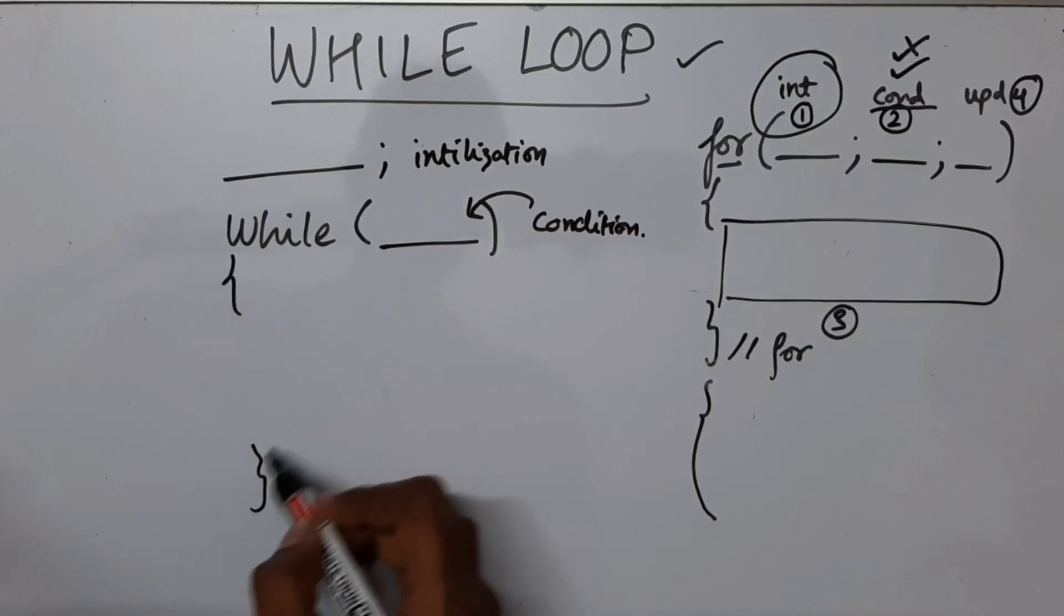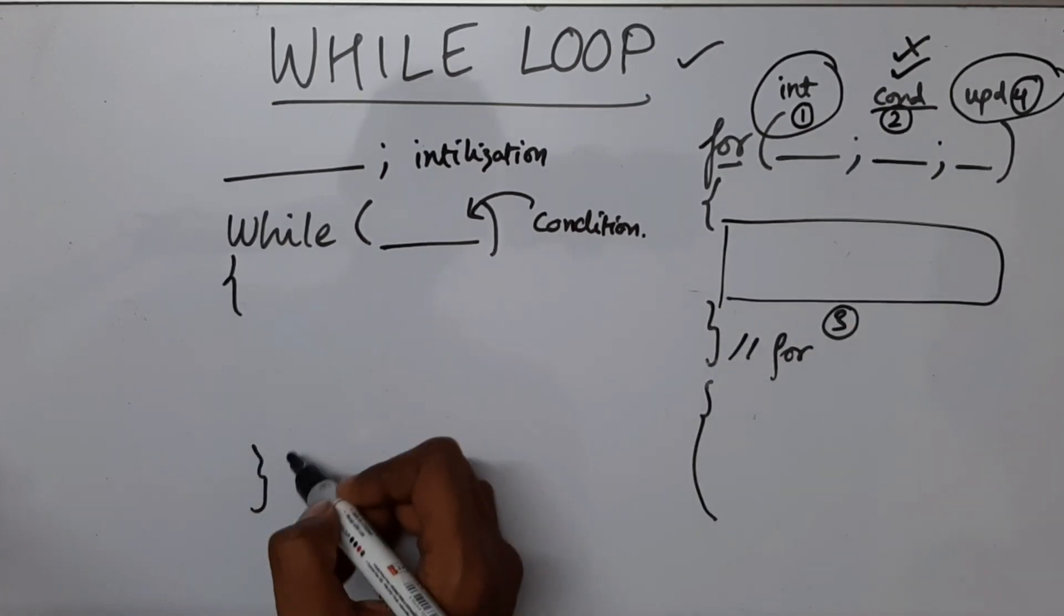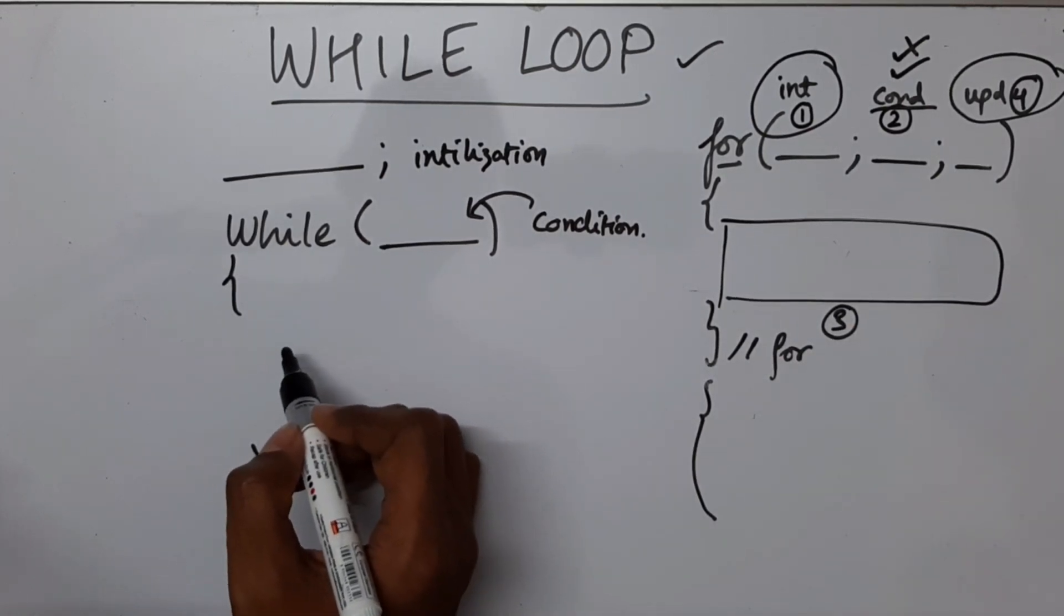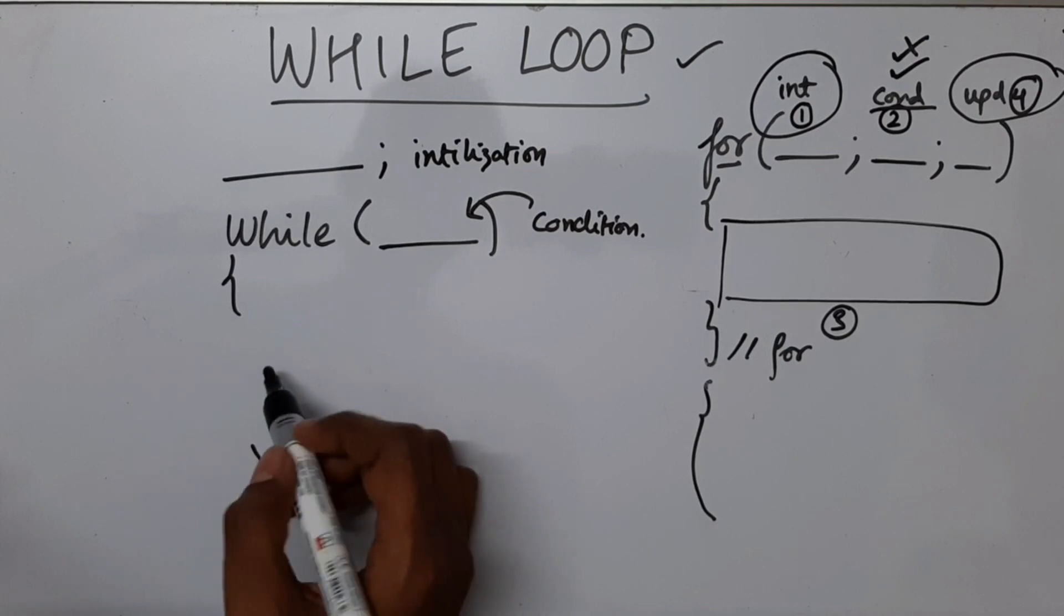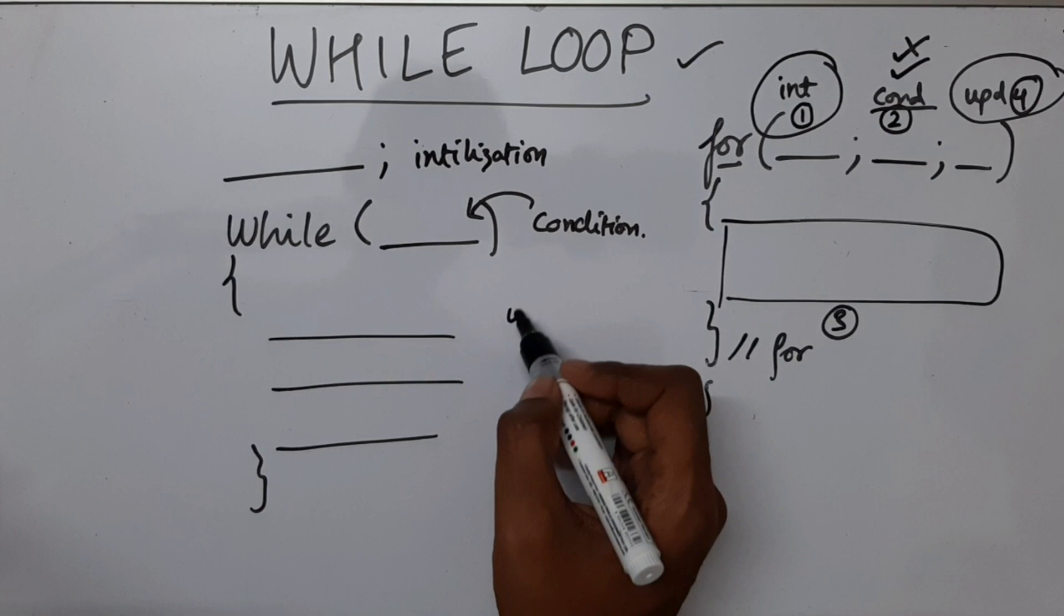Now we have the body. So inside this body, we are going to have this updation part. You can have it in any line of the program. So let's say we have three lines, we can have the updation in any of the line.